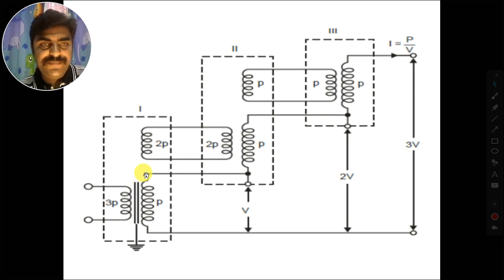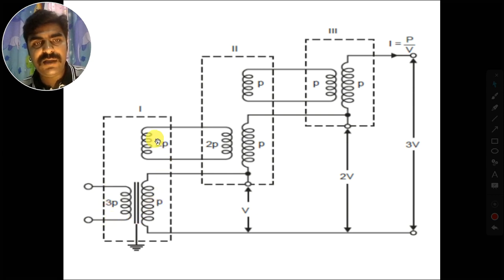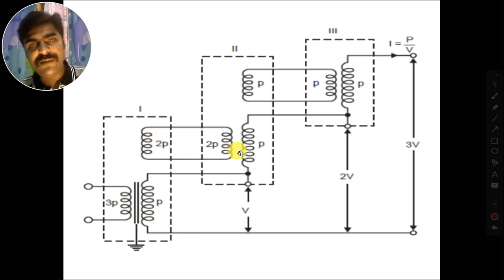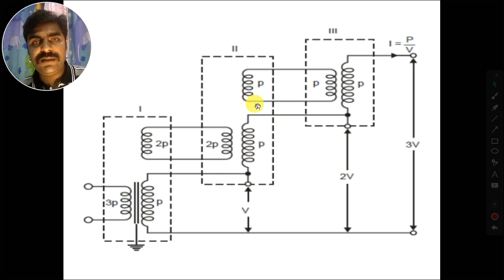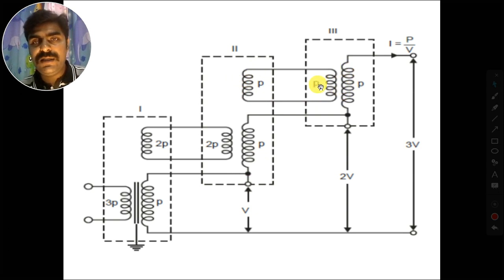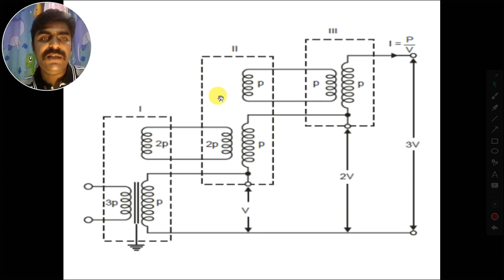Another important point is that the first stage transformer has three windings: primary, secondary, and tertiary or auxiliary winding. The output of this auxiliary winding is given as input to the second stage transformer. The second stage transformer also has a tertiary or auxiliary winding, and the output of that auxiliary winding is given as input to the third stage transformer. Only the third stage is a two-winding transformer; the first and second stage transformers are three-winding transformers.